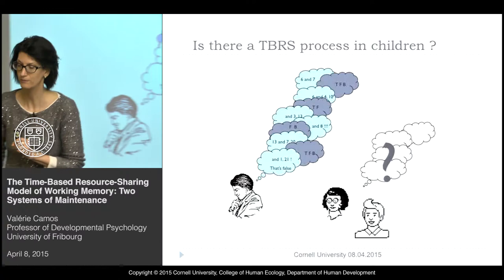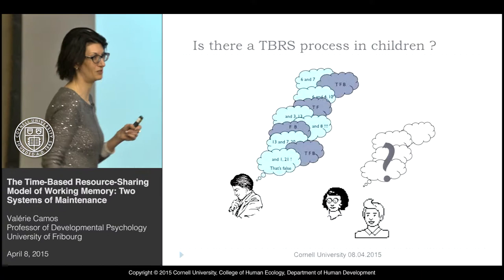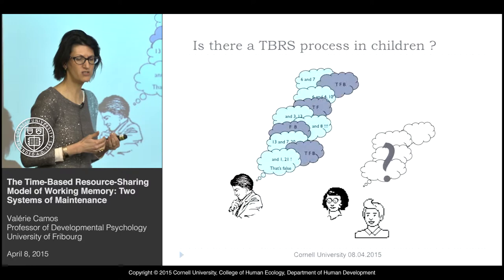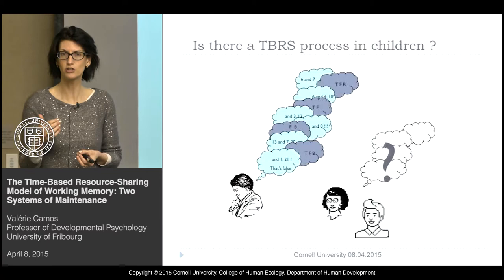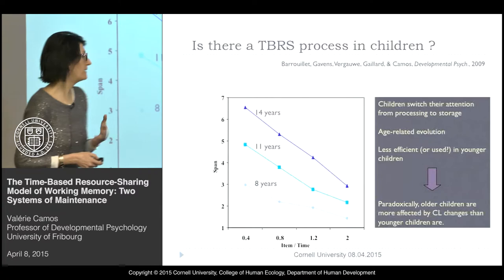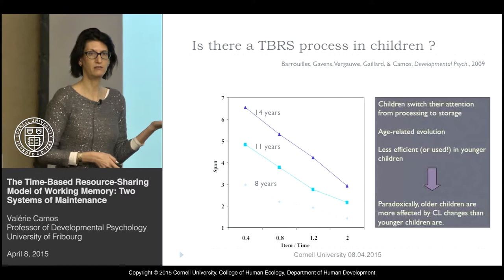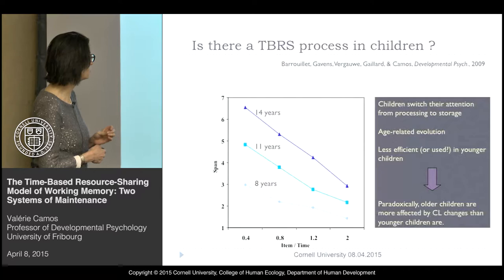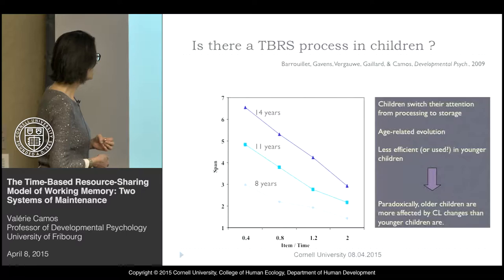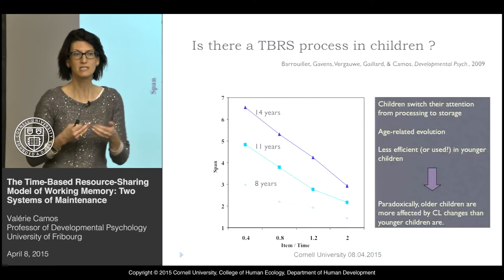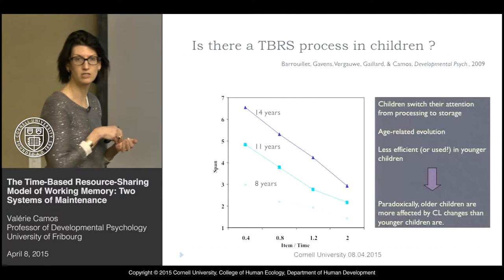Just a few words about development. All this started with the question of how we can understand the development of working memory. The first thing is: are we going to observe the same kind of relation between cognitive load and recall performance in children, indexing the functioning of an executive loop? As a first experiment, we used the same reading span task Pierre presented at the beginning, with 8-year-olds, 11-year-olds, and 14-year-olds. We varied the number of digits per time they have to read while maintaining letters. We replicate this linear relationship between cognitive load and the amount of information children were able to maintain.